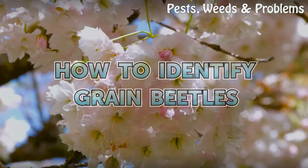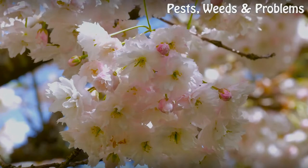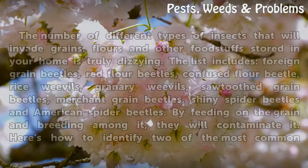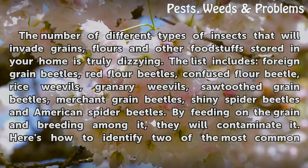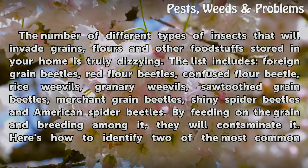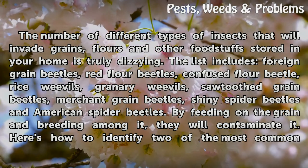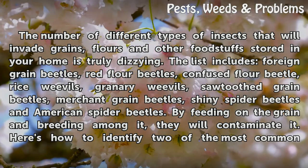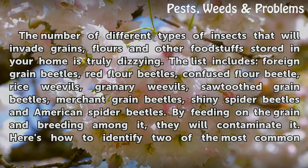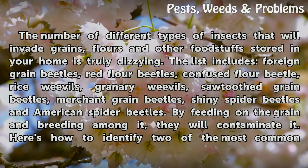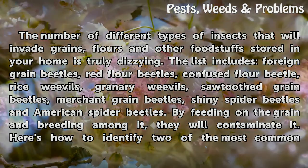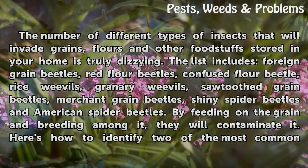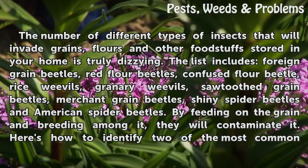How to Identify Grain Beetles. The number of different types of insects that will invade grains, flours and other foodstuffs stored in your home is truly dizzying. The list includes foreign grain beetles, red flour beetles, confused flour beetle, rice weevils, granary weevils, sawtoothed grain beetles, merchant grain beetles, shiny spider beetles and American spider beetles.